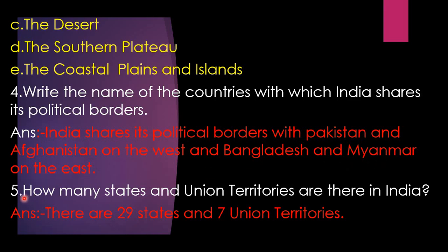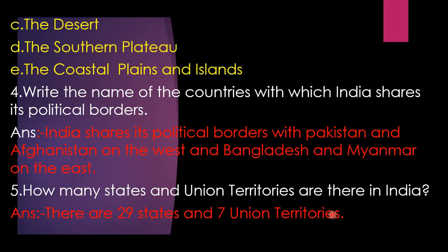Fifth question — How many states and union territories are there in India? Answer: There are 29 states and 7 union territories. Dear children, please take down the notes for Lesson 11, Our Country, and send it to my WhatsApp number as early as possible. Thank you, have a good day.